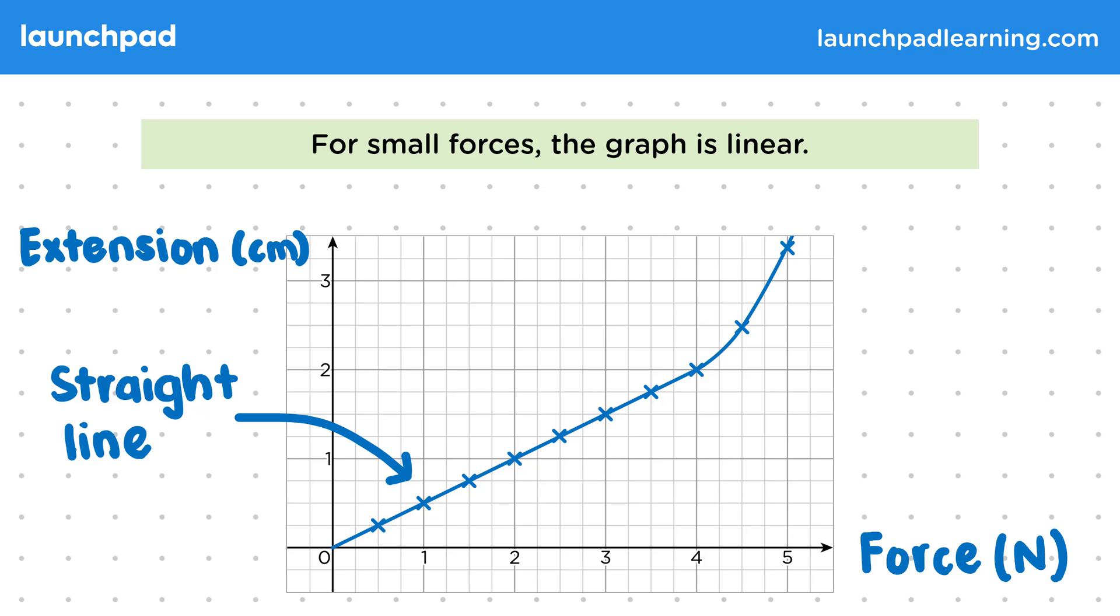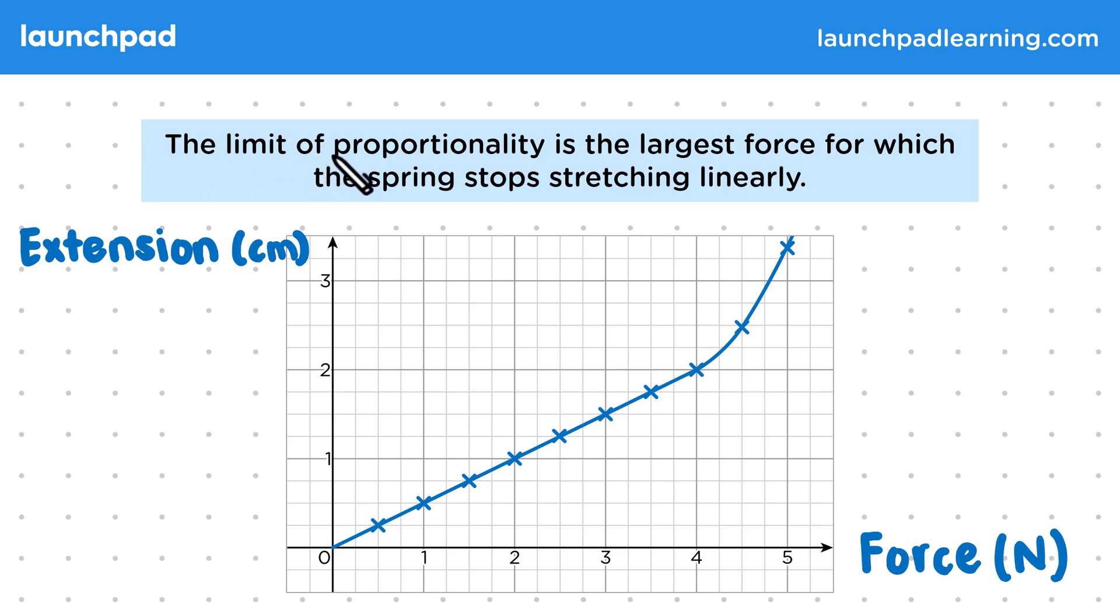But when does this graph stop being straight? The limit of proportionality is the largest force for which the spring stops stretching linearly. Here we can see the limit of proportionality for this graph. In an exam you may be asked to estimate a spring's limit of proportionality by looking at its force extension graph.